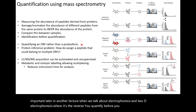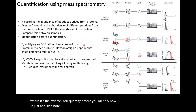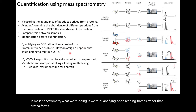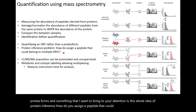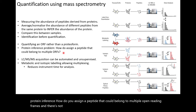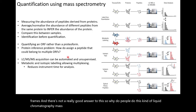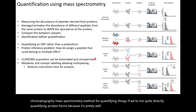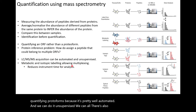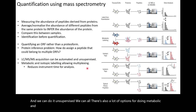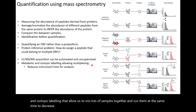In mass spectrometry we're quantifying open reading frames rather than proteoforms, and I want to bring to your attention this idea of protein inference — how do you assign a peptide that could belong to multiple open reading frames? There's not a really good answer to this. So why do people do LC-MS quantification despite not directly quantifying proteoforms? Because it's pretty well automated and unsupervised, and there are lots of options for metabolic and isotopic labeling that allow mixing of many samples to decrease instrument time.